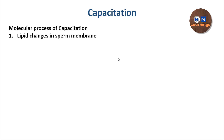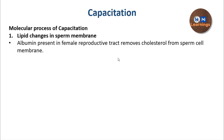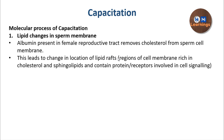Now we will see the first biochemical change — the lipid change in the sperm membrane. Albumin present in the female reproductive tract removes cholesterol from the sperm cell membrane. In the male reproductive tract, secretions deposit cholesterol onto the sperm cell membrane. The albumin in the female reproductive tract removes that cholesterol. This causes a change in the location of the lipid rafts. Lipid rafts are specialized regions of the cell membrane that are richer in cholesterol and sphingolipids, and they contain receptors and proteins involved in signaling.